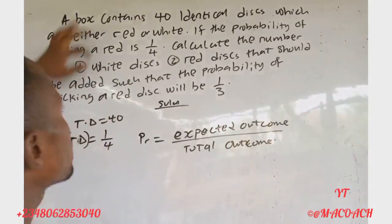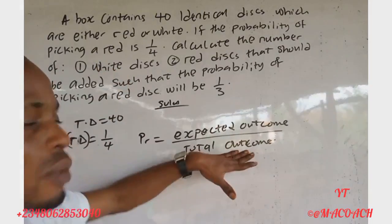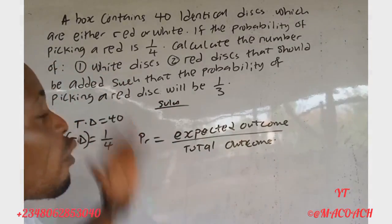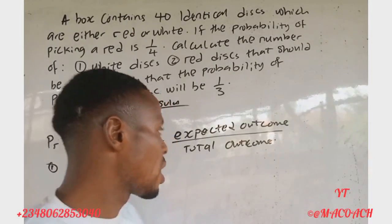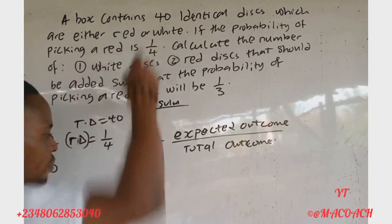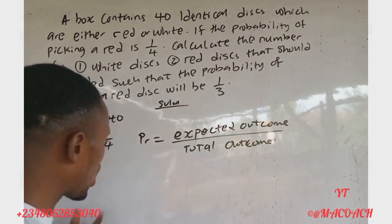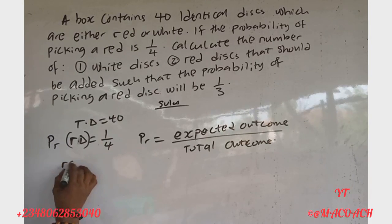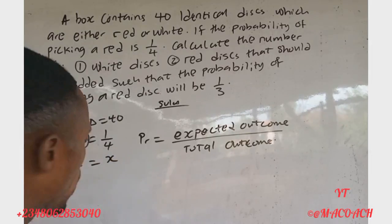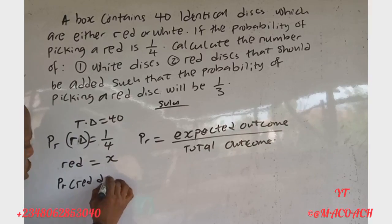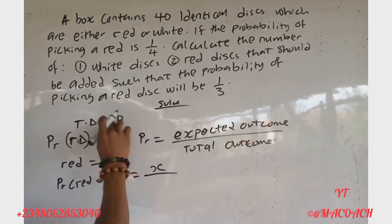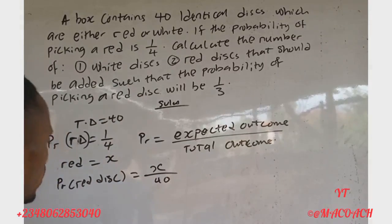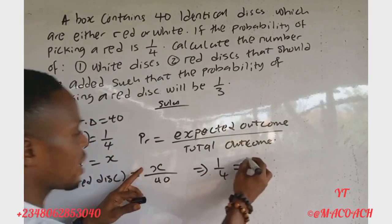The total number of disks inside the bag is 40 — that is the total outcome. The expected outcome is the number of red disks. Since we don't know the number of red disks, let's call it s. So: P(red) = s/40. We are given that the probability of red is 1/4, so: 1/4 = s/40.